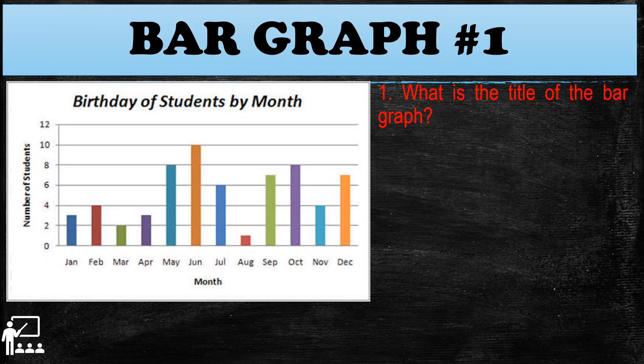Let's try bar graph number one. This bar graph shows the birthday of students by month. Let's proceed to the guided questions and also get familiar with the parts of the bar graph. The title is 'Birthday of Students by Month.' The horizontal axis shows the month, and the vertical axis shows the number of students.